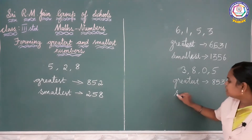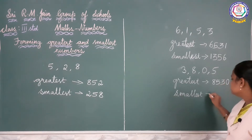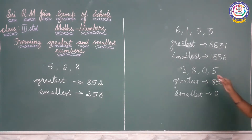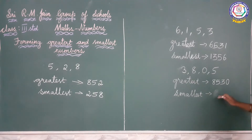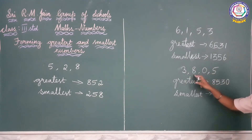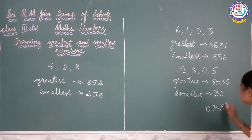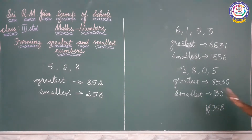Next we are going to find out the smallest 4-digit number. See which is the smallest number here — you do not write 0 first, because if you are writing 0 before the numbers it has no value. So you leave 0, then you compare the other numbers 3, 8, 5. Which is the smallest number? If you write 0 first it becomes only 358, not a 4-digit number. So you have to form a 4-digit smallest number.